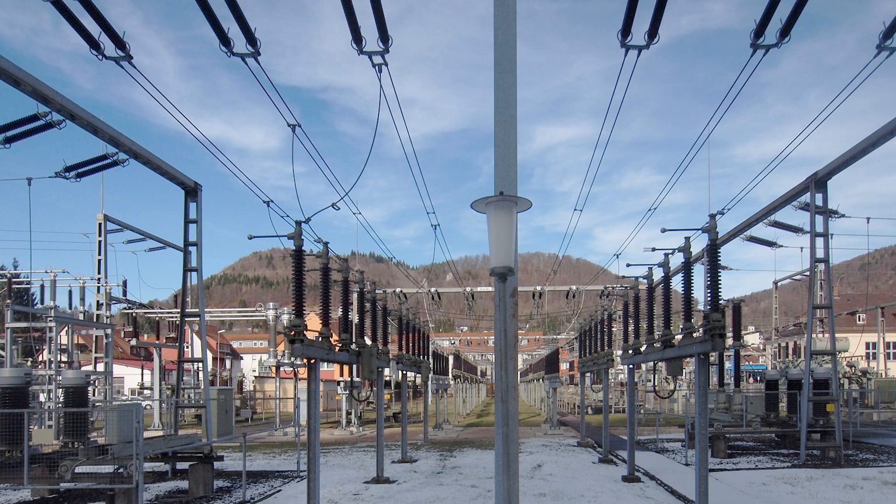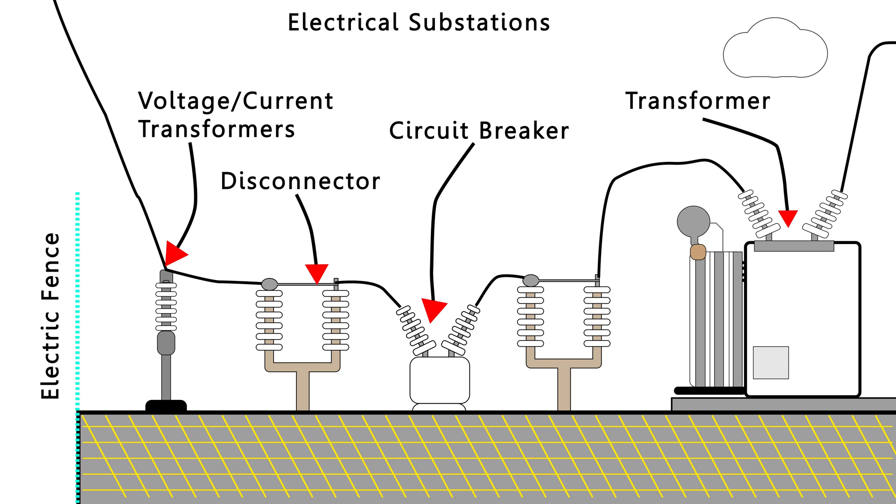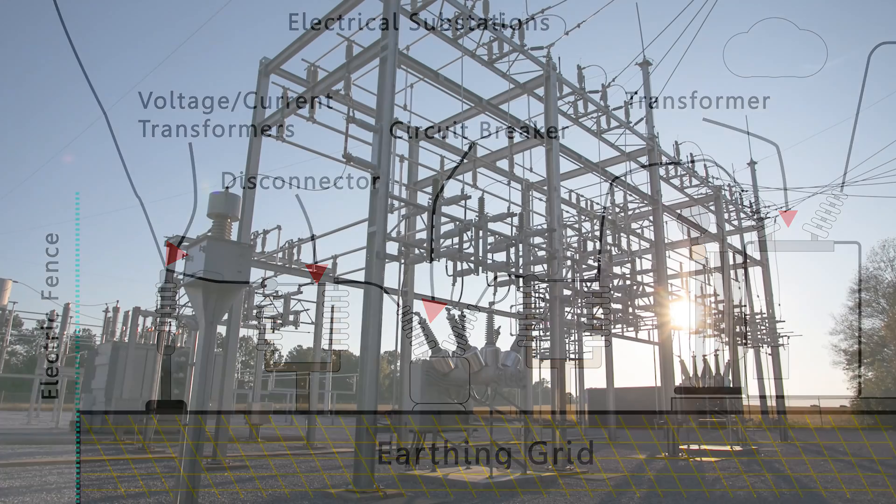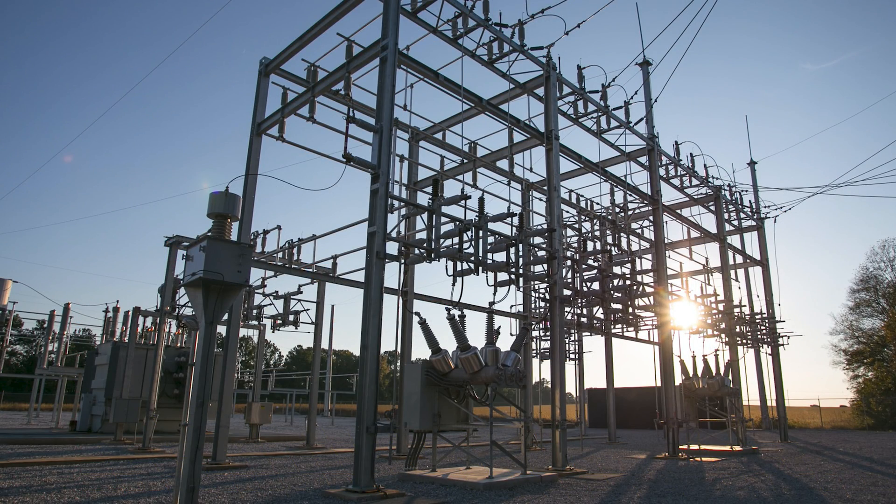Another important aspect of the substation is the earth grid. So underneath the substation you have a grid, a metallic grid, and that helps maintain safe step and touch voltages within the substation to protect personnel from dangerous voltages and to also provide a low impedance path to ground if there's a fault.